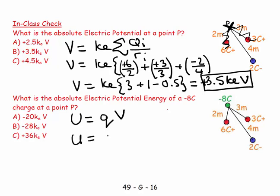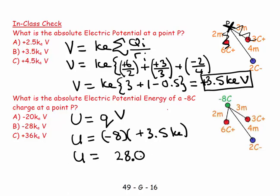The potential energy equals minus eight times plus 3.5 ke. Don't forget your ke. So U equals... eight times 3.5... that's minus 28 ke.